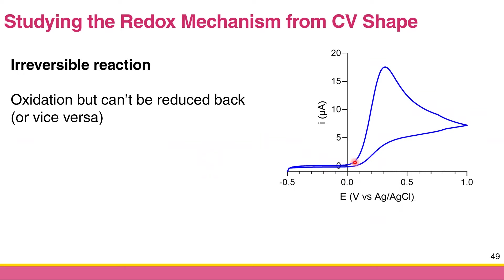The third type is the irreversible reaction. This means the species can undergo only oxidation and cannot be reduced back, or vice versa — only one direction is possible. Looking at the CV shape, you can still get the anodic peak current and anodic peak potential, but when you scan the potential back, you don't get a cathodic peak, meaning the oxidized form cannot be reduced back to the reduced form. This is an irreversible reaction.